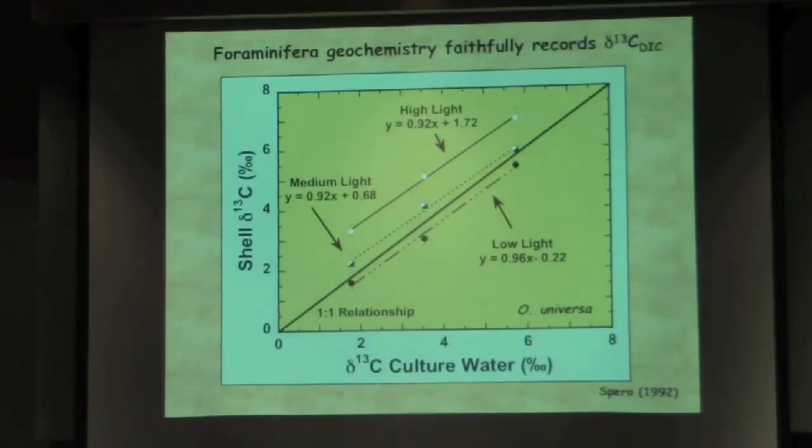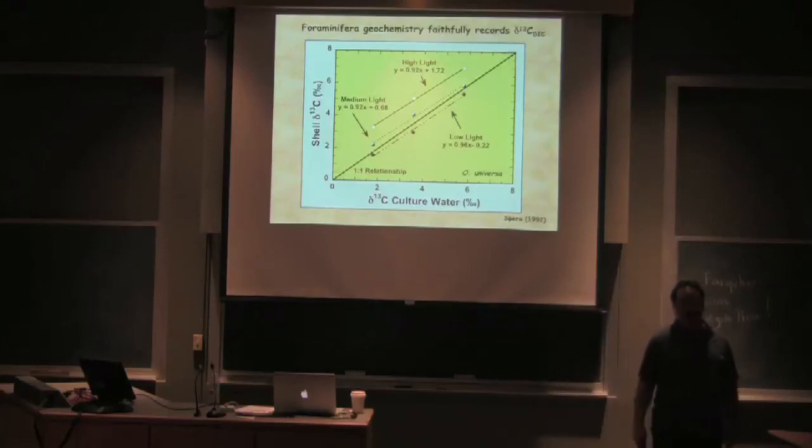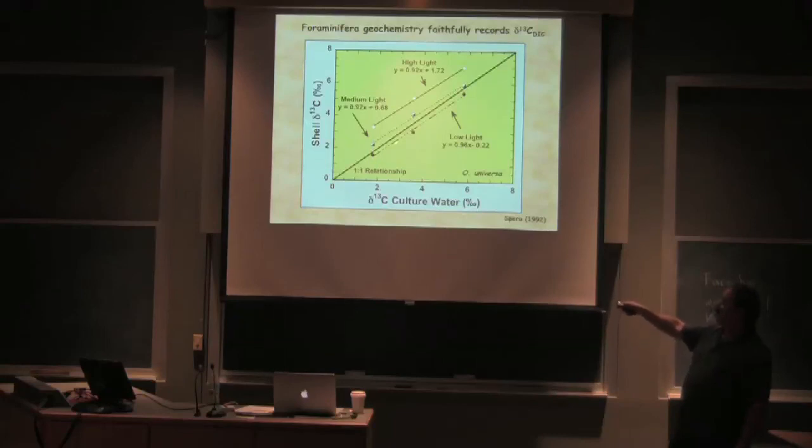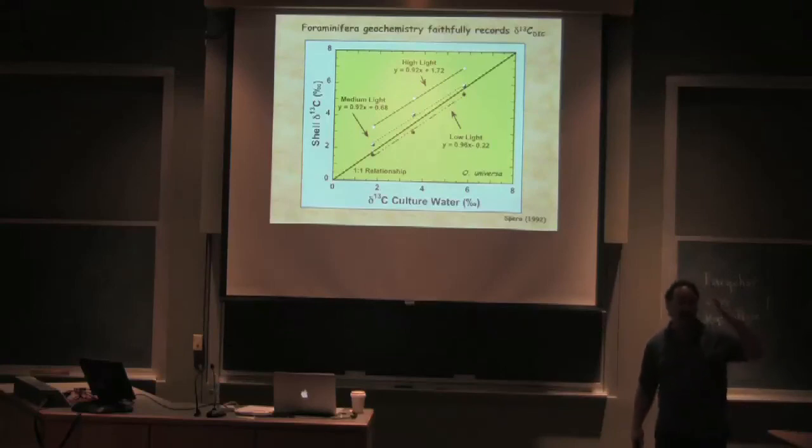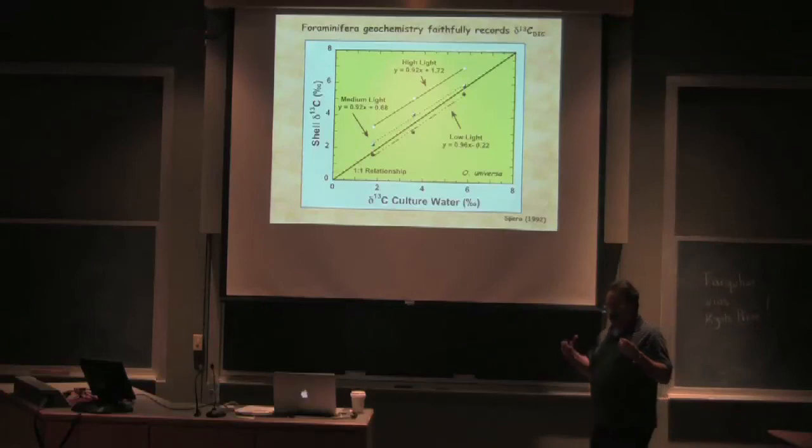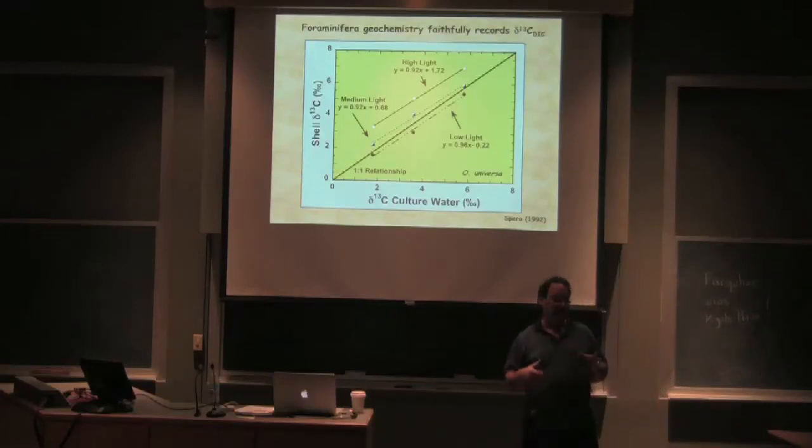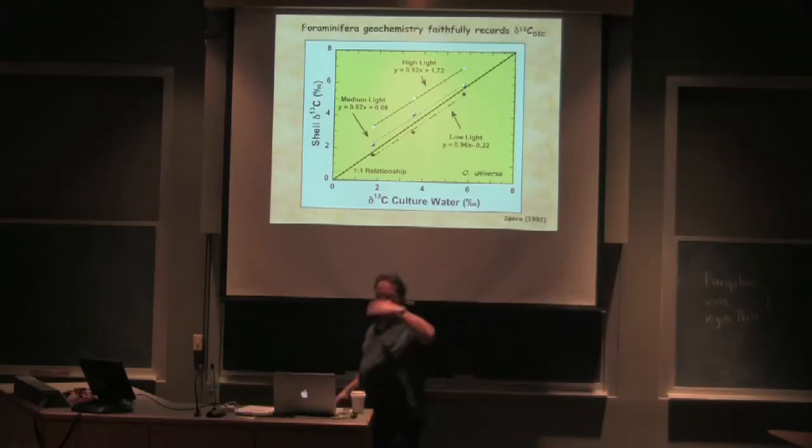Next question was, if you change the seawater delta-C13, does the shell change? The answer is yeah. It was a simple experiment. Change the delta-C13 of the DIC in the culture water, look at the shell. This is in low light, medium light, and high light. And you can see that pretty much with an error there, it's a one-to-one relationship. So the carbon isotopic composition of biomineralizing organisms like forams, pteropods, corals, sclerosponges, they are recording the delta-C13 of DIC. And physiology is now shifting the delta-C13 DIC up and down depending on photosynthesis and respiration from that baseline. So if you change the seawater delta-C13, everything changes. The physiology then keeps messing with it.